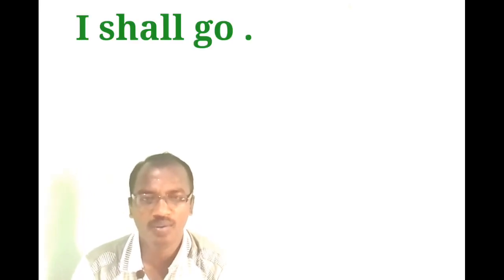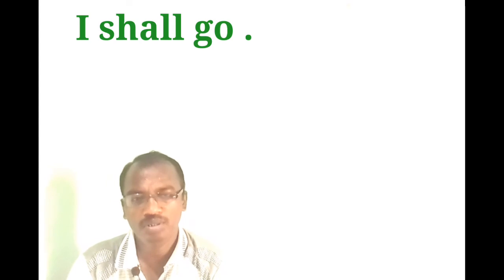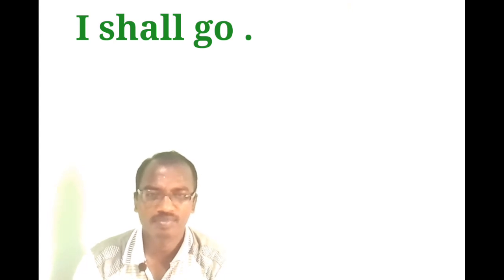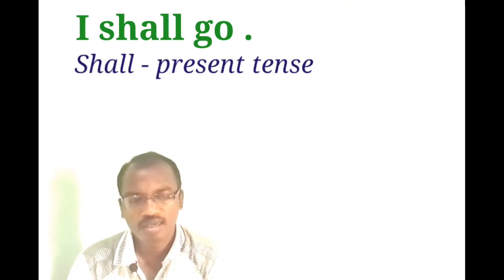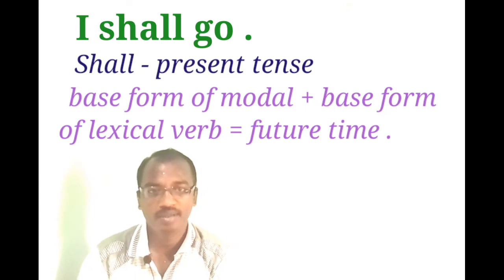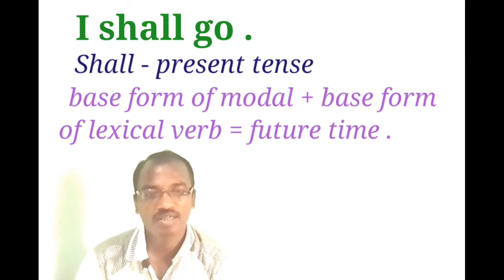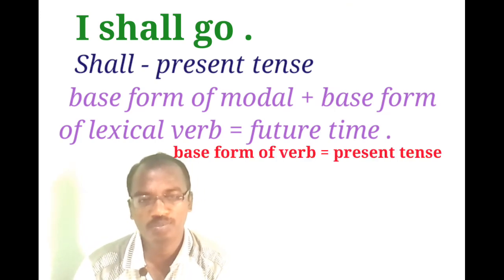When I say 'I shall go' — 'shall' is the modal verb in its base/best form and 'go' is the base form of the lexical verb. What tense is 'shall'? Present tense. But what time is it referring to? It is referring to future time. So 'shall' and 'will' — these are present tense forms but they refer to future time. That is why English grammar says there is no future tense. Because the verb form used is the base form, and all base forms of verbs refer to present tense.